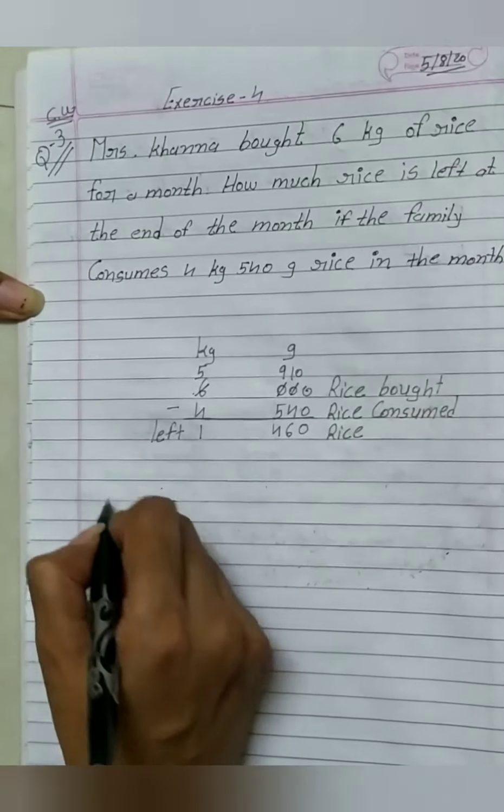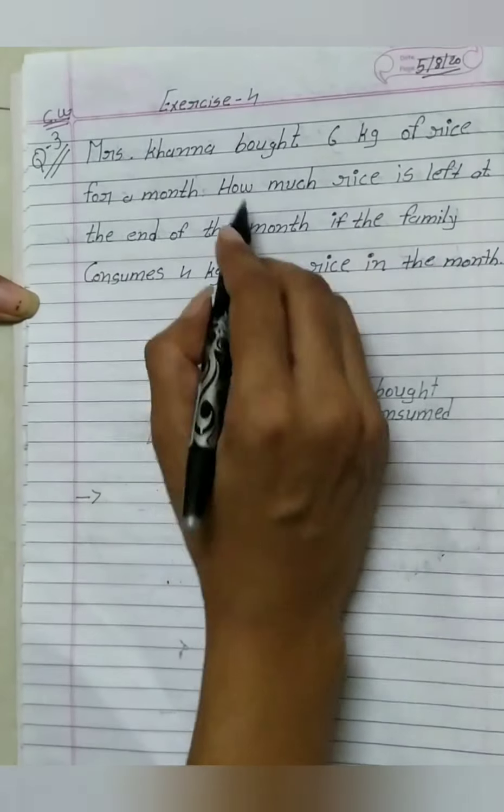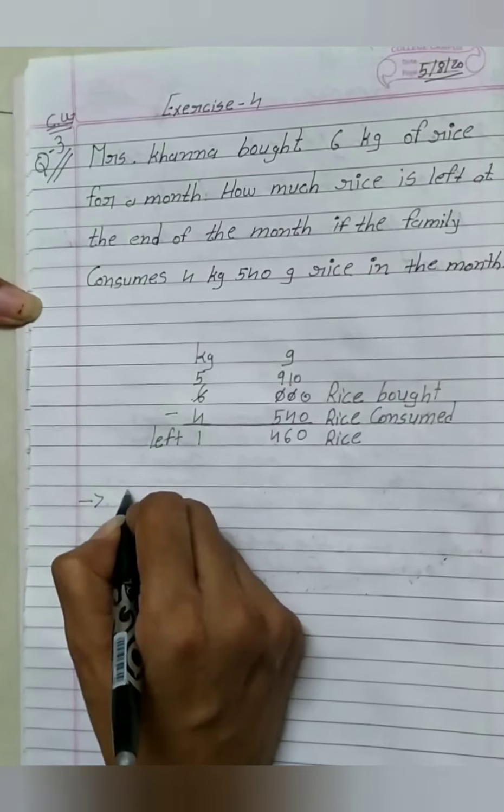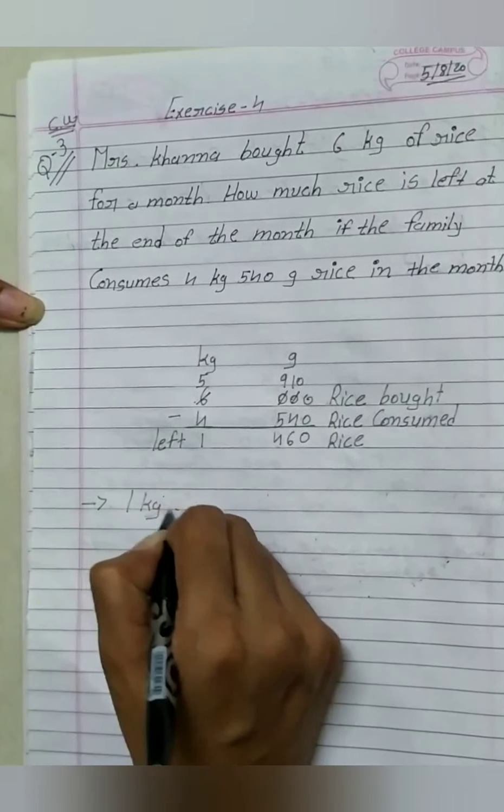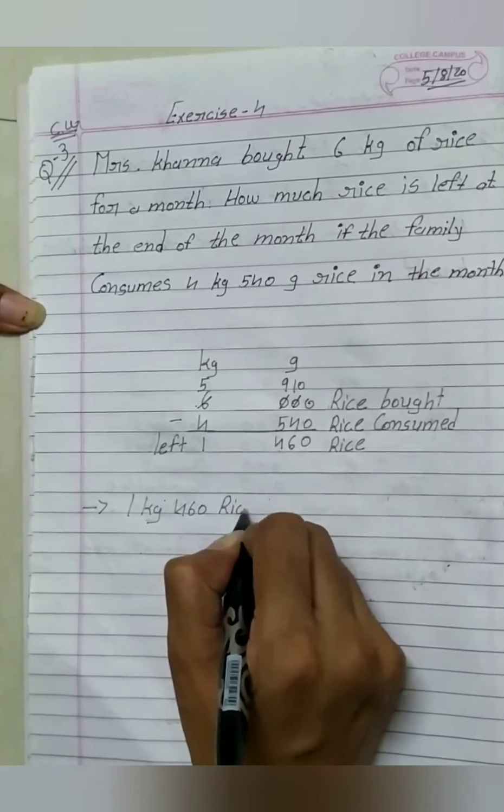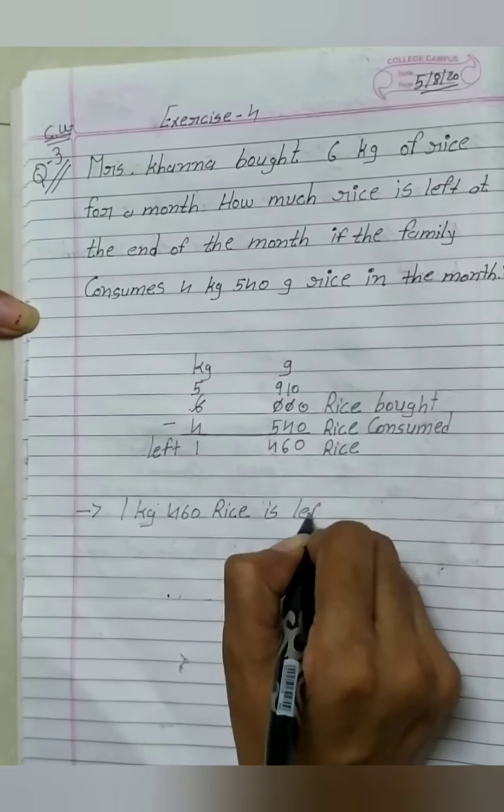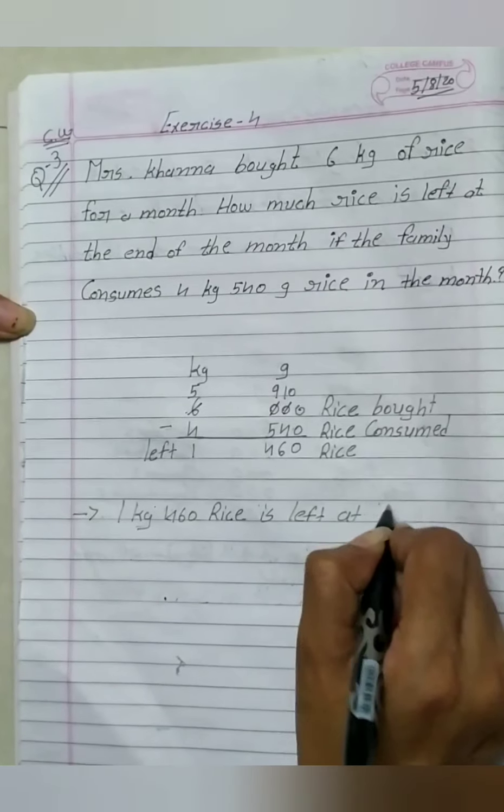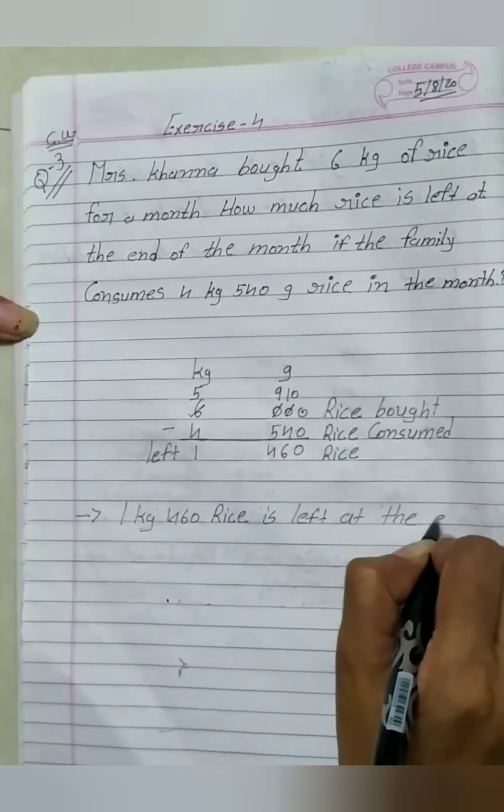The last line is 1 kg 460 gram rice is left at the end of the month.